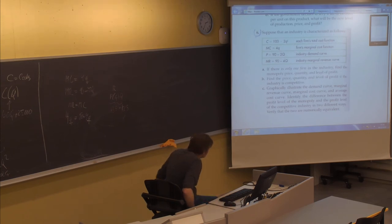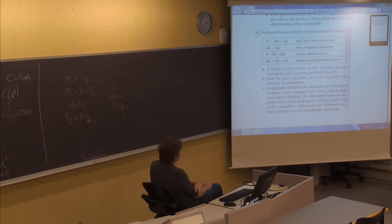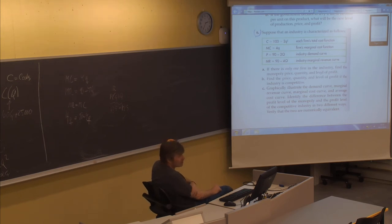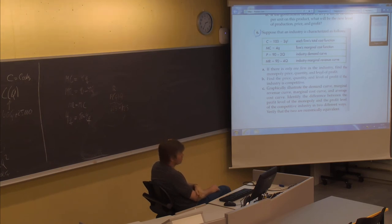Let's move to sub-question B: find the price, quantity, and level of profit if the industry is competitive. We have industry information so we should be able to find the perfectly competitive solution and compare it to the monopoly case. We know that in a perfectly competitive solution, price should equal marginal cost.